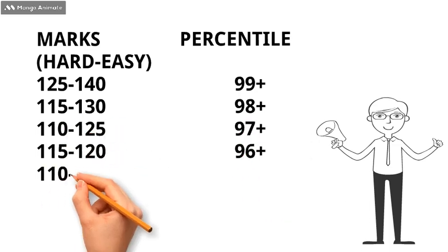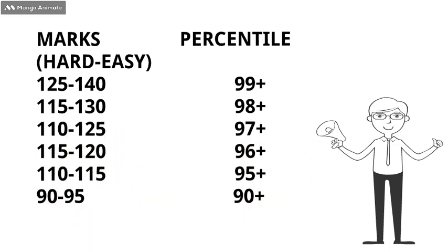Similarly for 98+, the range can be 115 to 130, and for 97+ percentile, it will be around 110 to 125 marks. And you can see the range for the rest of the percentiles as well. So this is the expected marks versus percentile range for MHT-CET 2024.